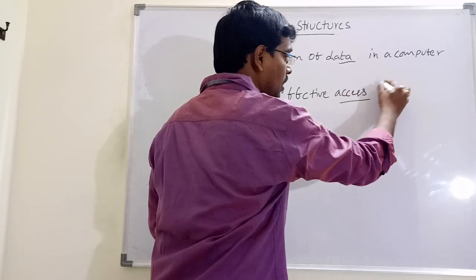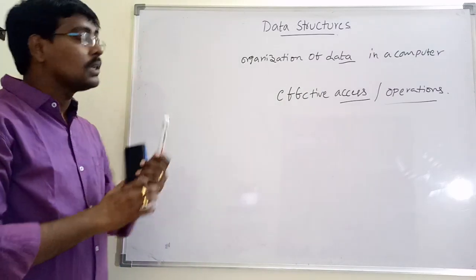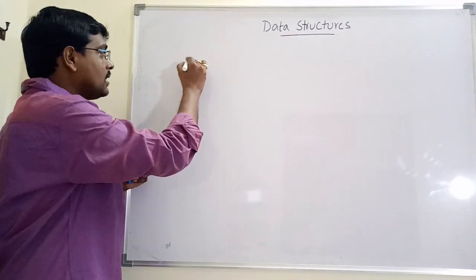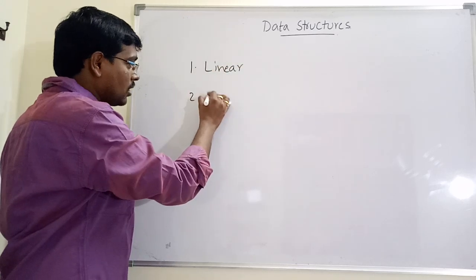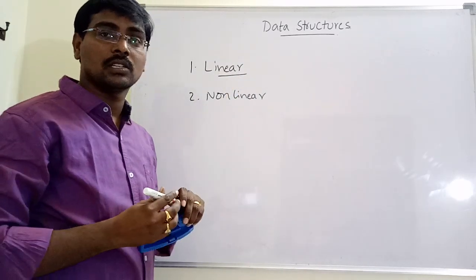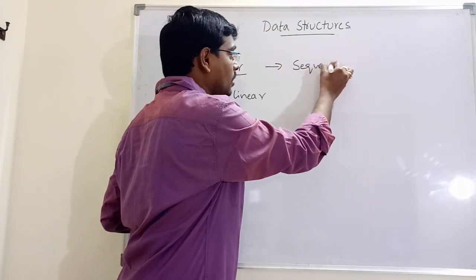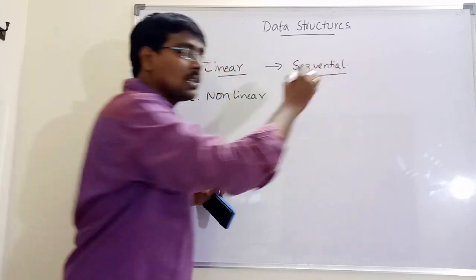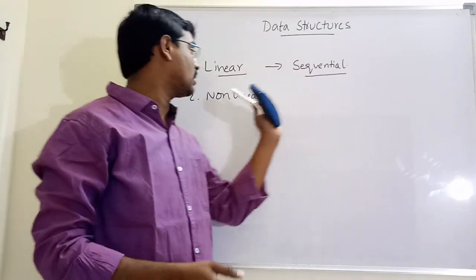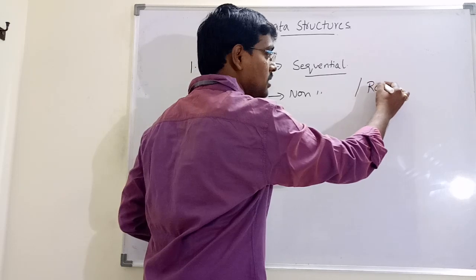In simple terms, a data structure is the organization of data in a computer for effective access and for effective operations. To implement operations very effectively, data structures are categorized into two types: one is linear data structure, and the second one is nonlinear data structure. Linear data structure means the elements are placed in a sequential manner. In nonlinear data structure, there is no need of sequential arrangement.